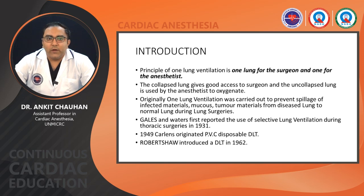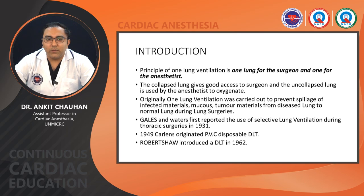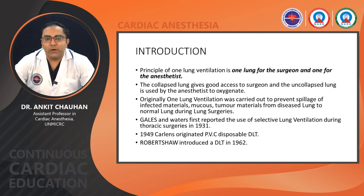First, an introduction. The principle of one lung ventilation is: one lung for the surgeon and one lung for the anesthetist. The collapsed lung gives good access to the surgeon, and the uncollapsed lung is used by the anesthetist to oxygenate. Originally, one lung ventilation was carried out to prevent spillage of infected material, mucus, and tumor material from the diseased lung to the normal lung during lung surgery.